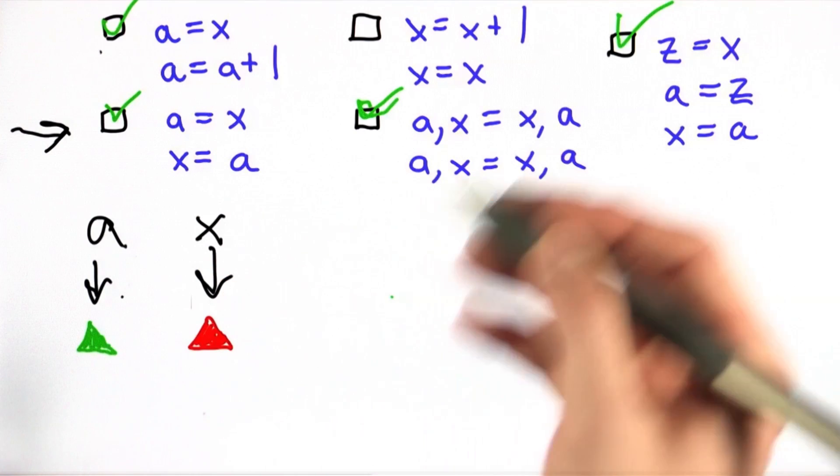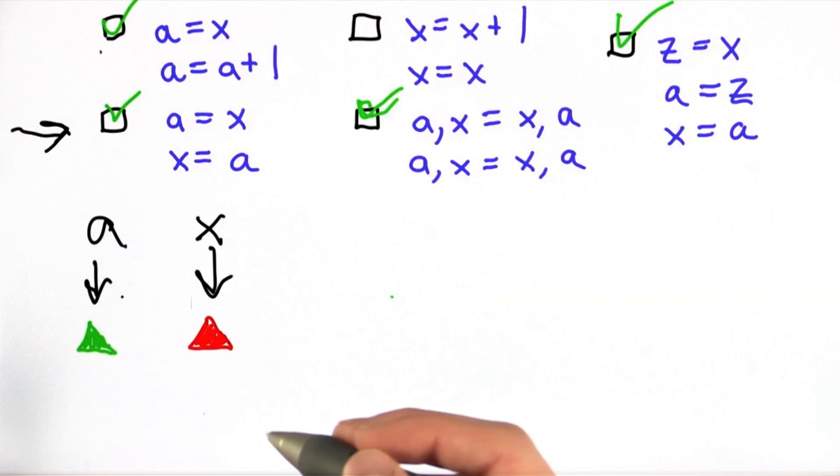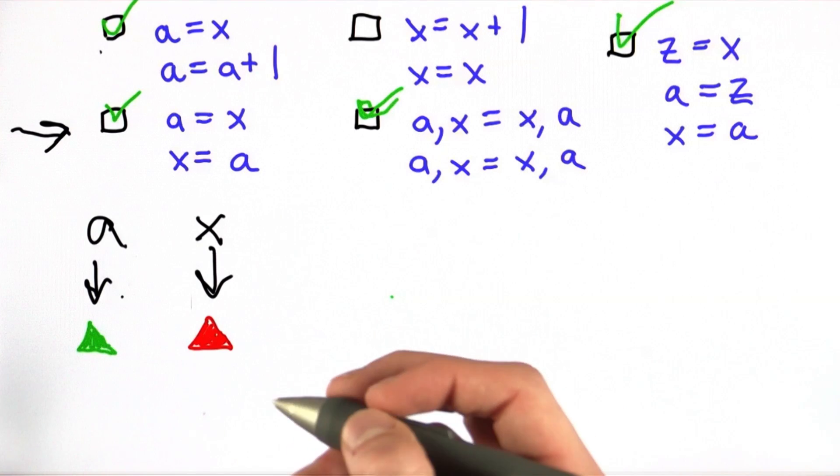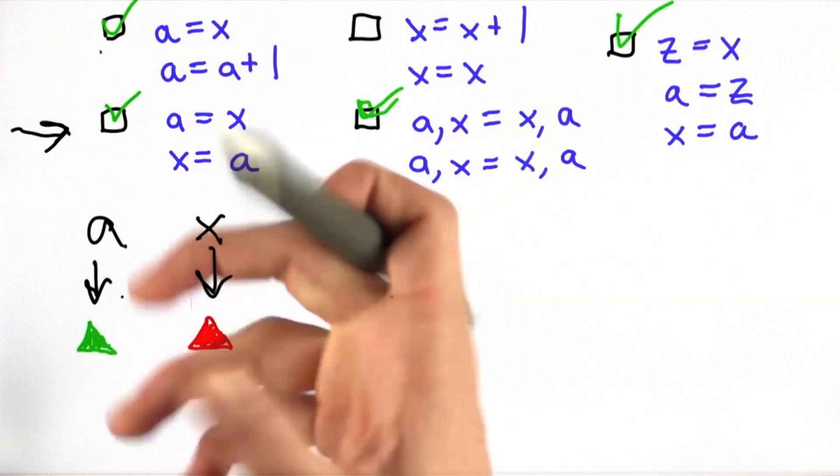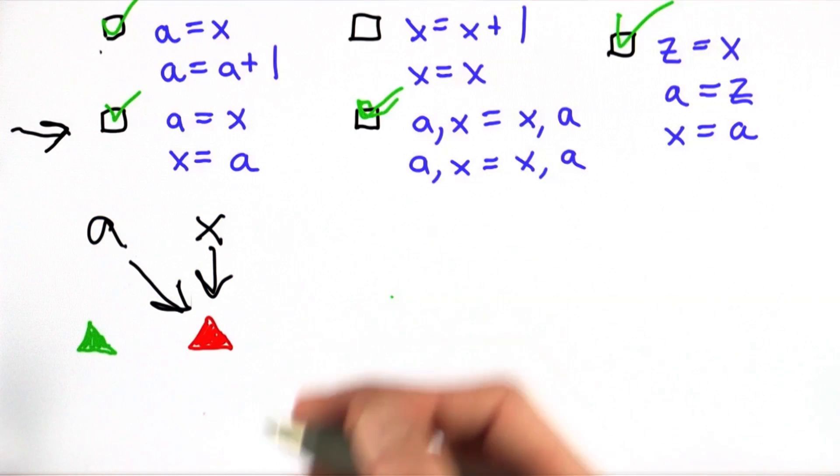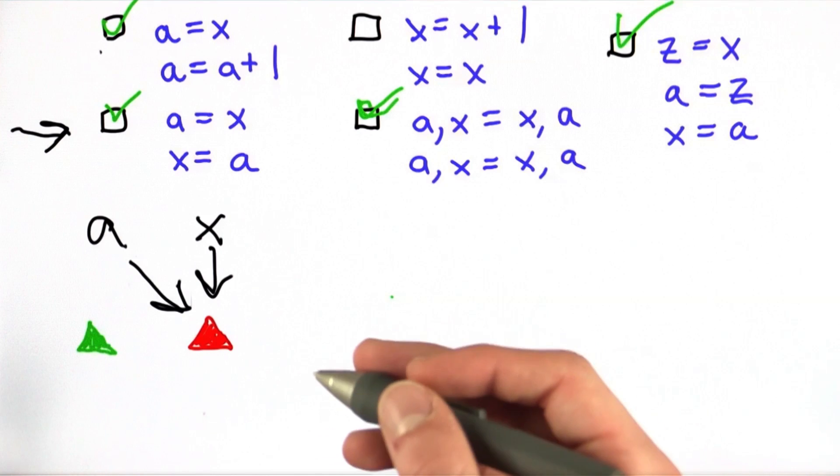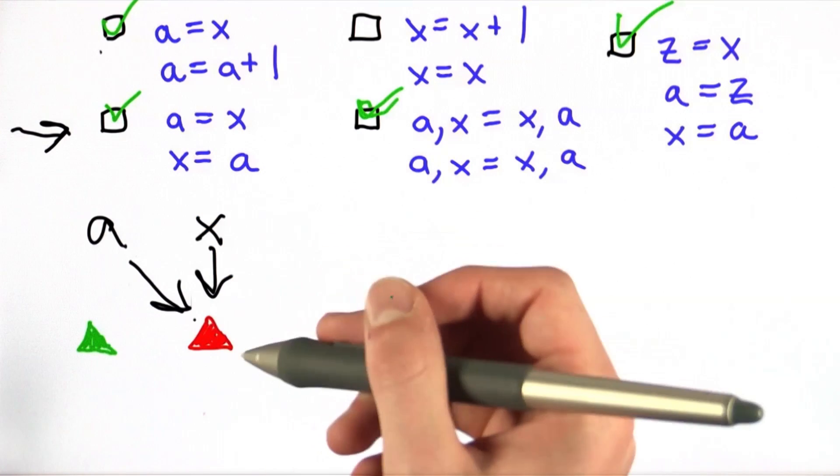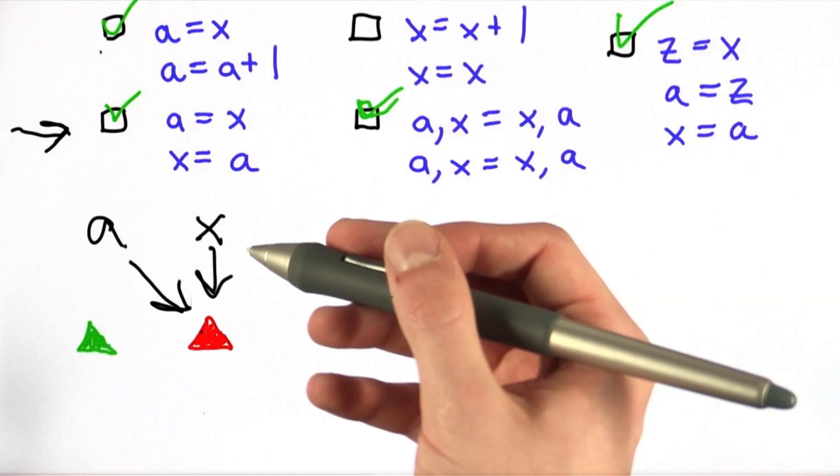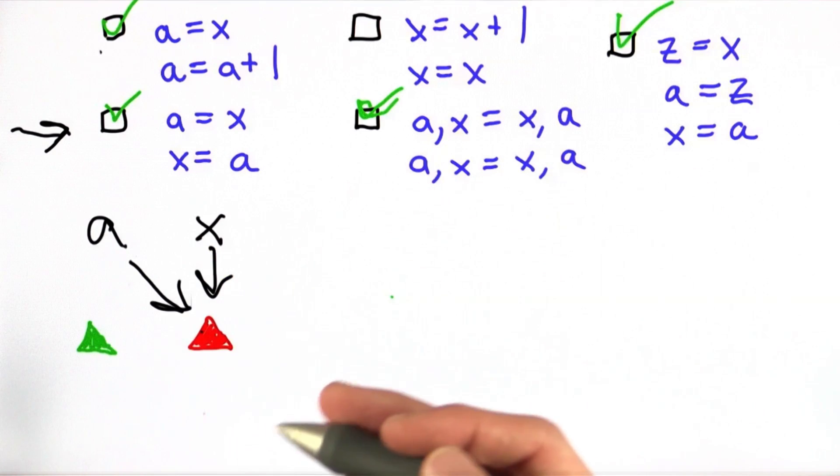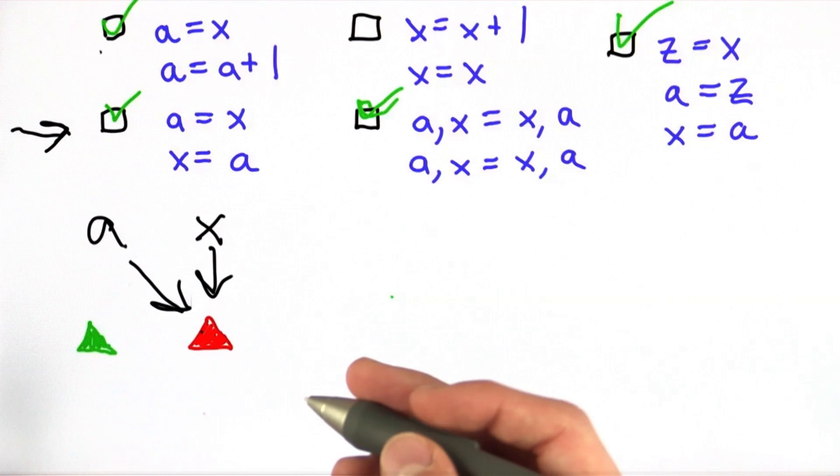A and X, as described, refer to initial values. The first line of code says that A refers to what X refers to. So as we did in the last problem, A and X both refer to the red triangle. Now X refers to what A refers to. Well, as you can see, A also refers to the red triangle. So the result is that X still refers to the red triangle, and since that's what it was initially, the value of X has not changed.